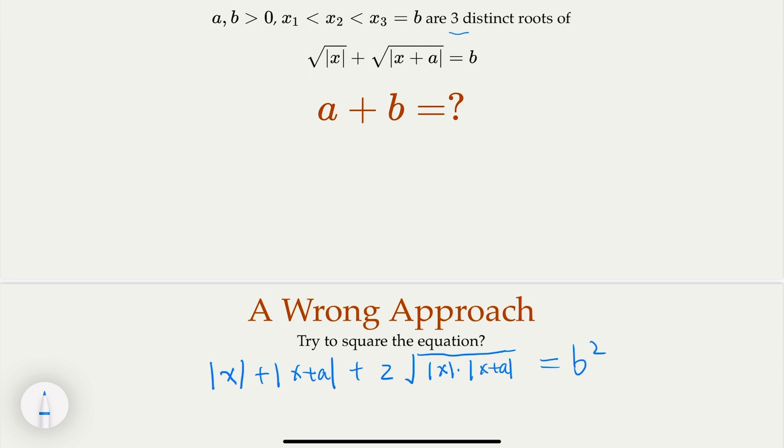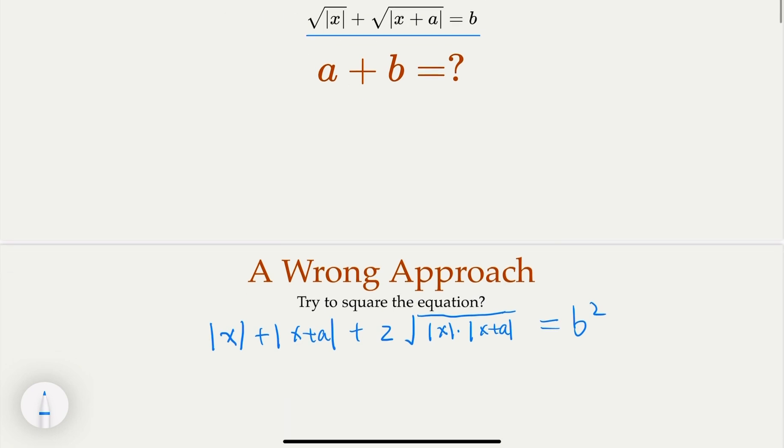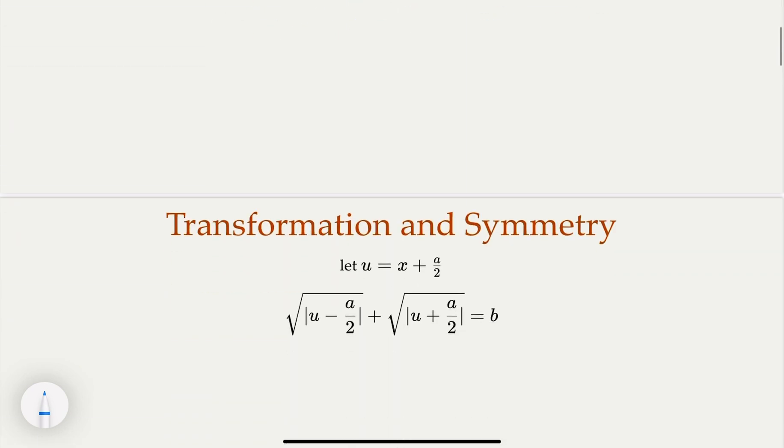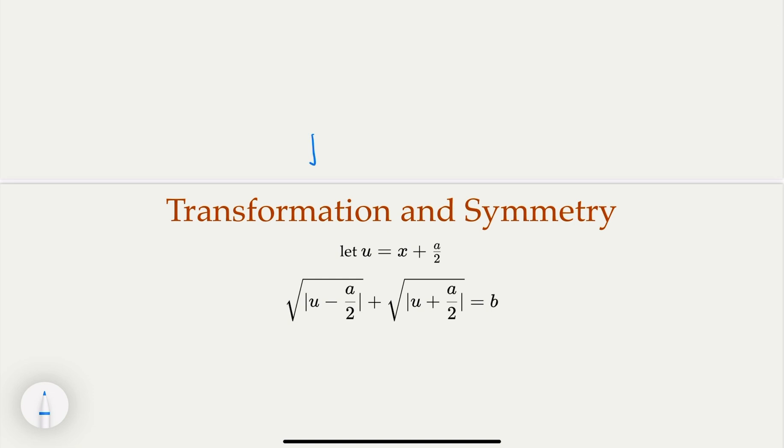Alright, so how is this case? So this is the original equation, right? Okay, so we're going to have variable substitution. Let's write down the original equation here. Yeah, equal b. So with this substitution, we're going to let u equal x plus half of a. So in this case, the original equation turns the equation in u. Let's say this function is f(u) here.